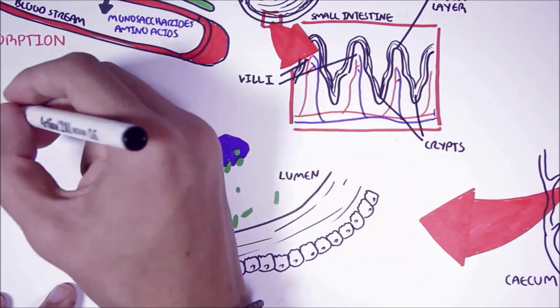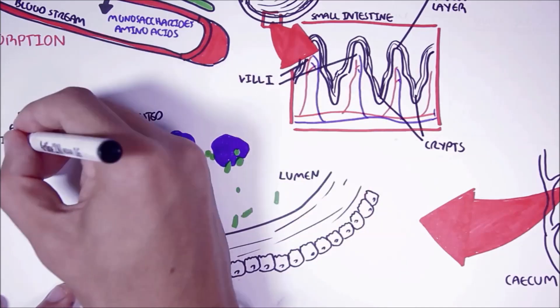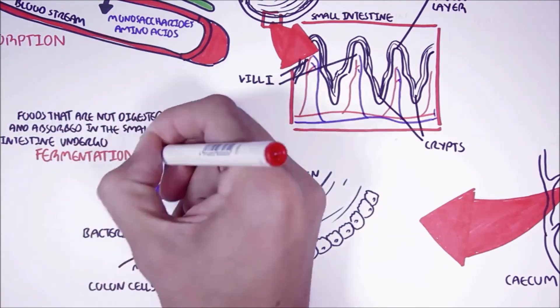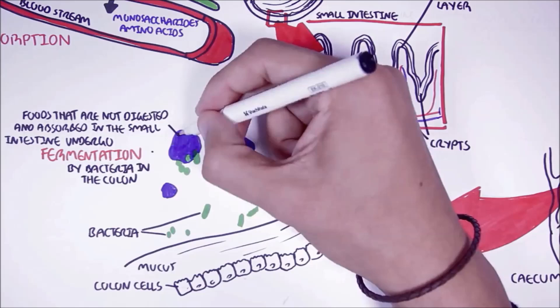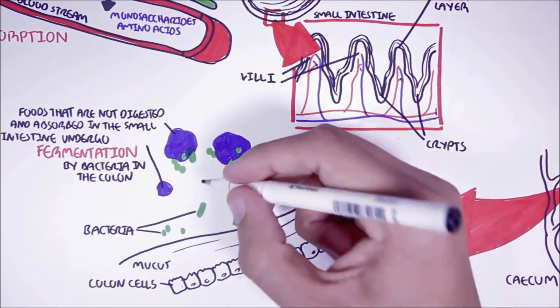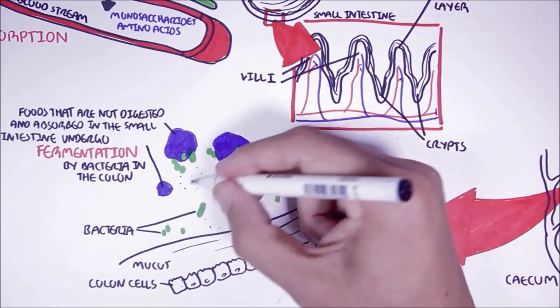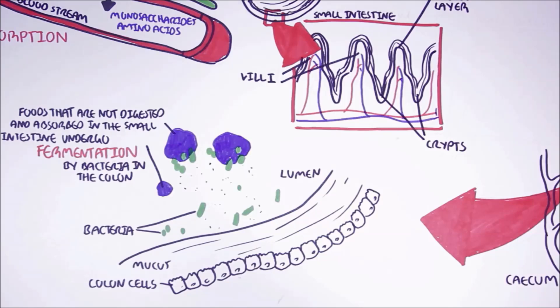Foods that are not digested and absorbed in the small intestine can undergo fermentation by bacteria in the colon. Through fermentation, the bacteria can produce many substances that the human body can use, such as short chain fatty acids.